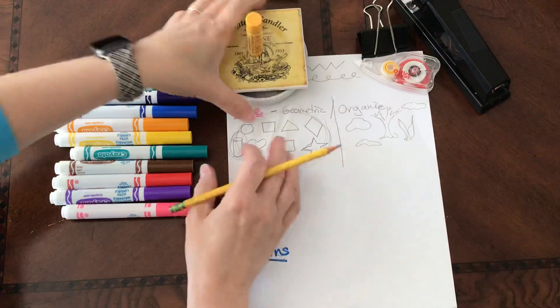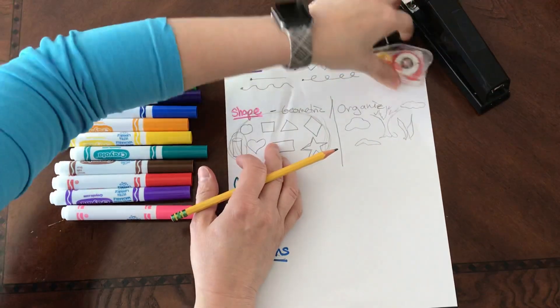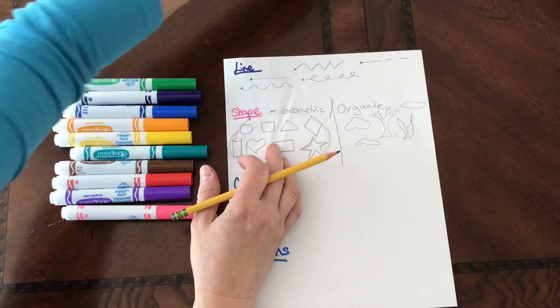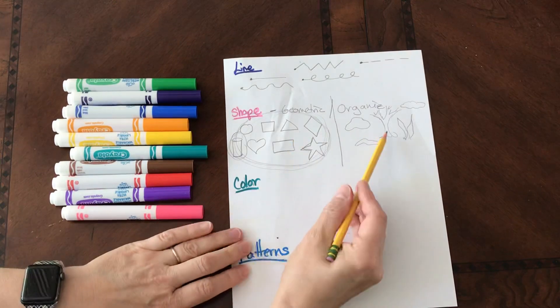So anyway, that's how you know the difference. So take a look and start noticing around your house. What are things that are geometric and organic?